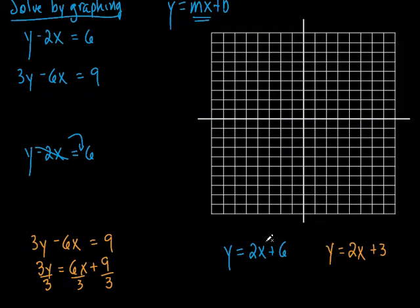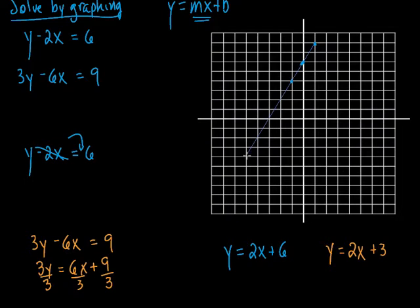Where do those lines intersect? Let's graph y equals 2x plus 6. The y-intercept is 6 — one, two, three, four, five, six. The slope is 2, so I rise 2 and run 1. Or I could rise down and run to the left — one, two, one. Look at that, it still lines up. Let's stretch it out a little. There's the blue one. Now let's do this yellow-orange one. The y-intercept on this one is 3, so I'm going to start here and go up 3 — one, two, three. And look at the slope — oh, the slope is the same thing.